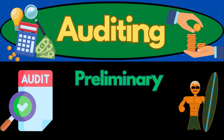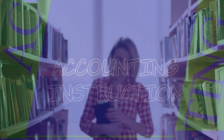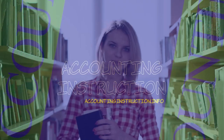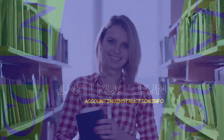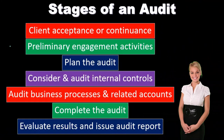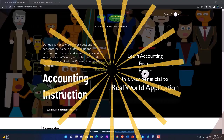In this presentation we will take a look at preliminary engagement activities. In a prior presentation we took a look at the audit, breaking it out into stages — those stages including the client acceptance and continuance, preliminary engagement activities, and support.